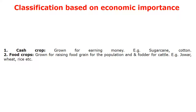Classification based on economic importance defines cash crops and food crops. Cash crops are grown only for making money, like Sugarcane, Cotton, Jute, and Tobacco. Food crops are grown for consumption purposes, and fodder crops are grown for cattle.